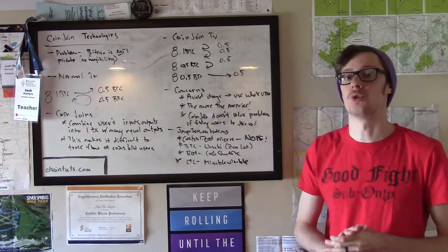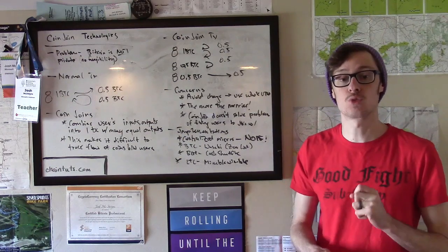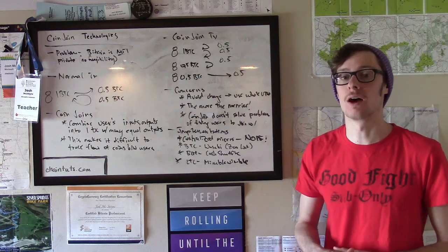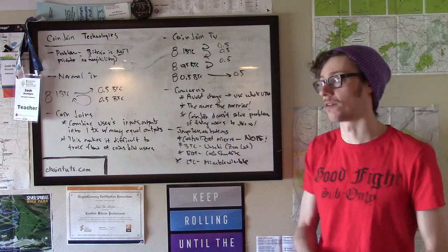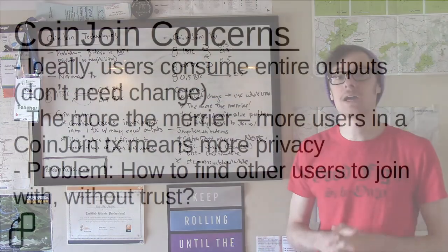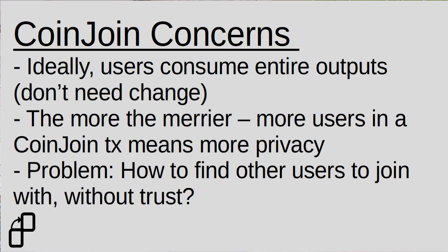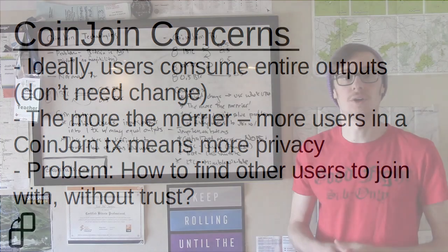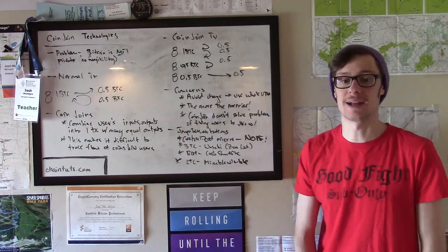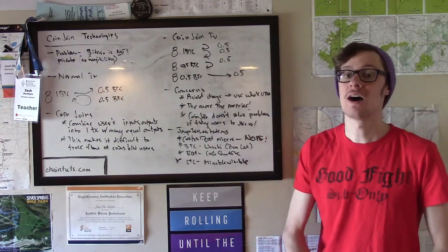There are some concerns with CoinJoin important for making this algorithm work well. This is fairly complex, and it's very important CoinJoins are done correctly to preserve privacy. One concern is you generally want to avoid change. It's best to consume an entire UTXO to send to a receiver or shuffle back to yourself as part of equally sized outputs. When you have distinguishable change, those outputs can be traced in future transactions, revealing you were part of this CoinJoin.